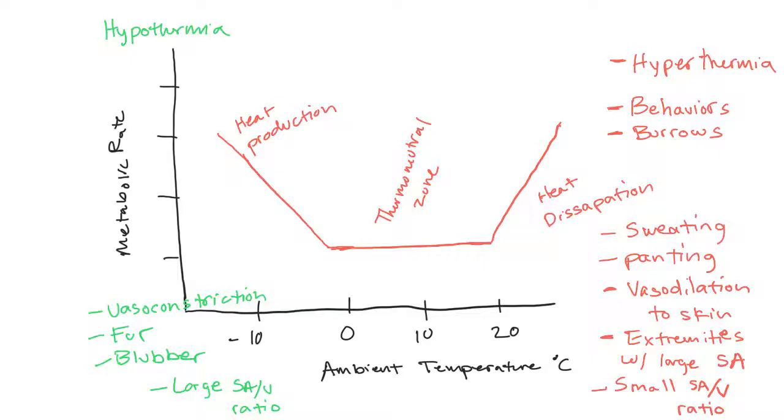So why do cetaceans have blubber instead of fur? There's like a coating of blubber that's waterproof, right? Skin. Whereas like fur, no matter how thick it is, it'll eventually get wet. And then the thermal conduction increases when it gets wet. So if your fur is dry, that's great. But if it gets wet, then it no longer is as effective. And blubber is going to stay the same.